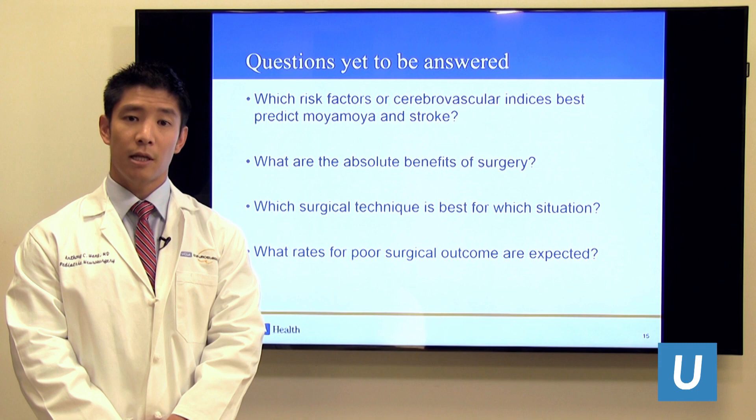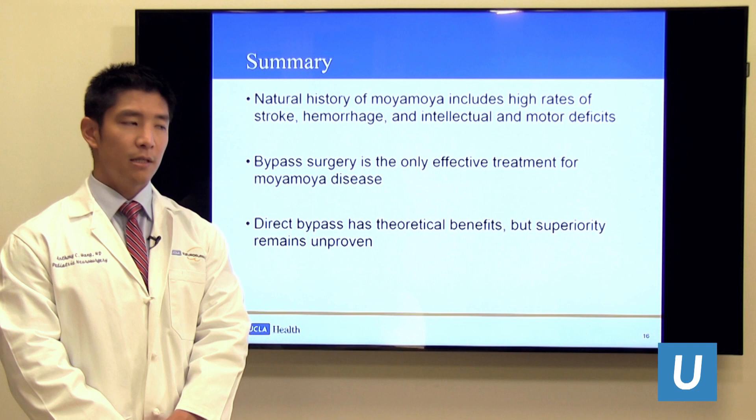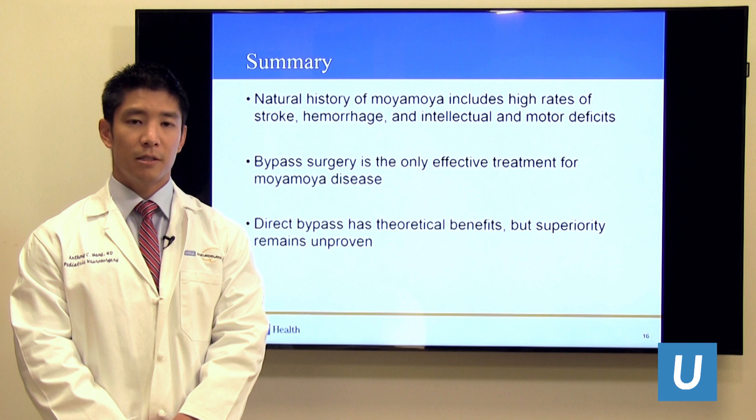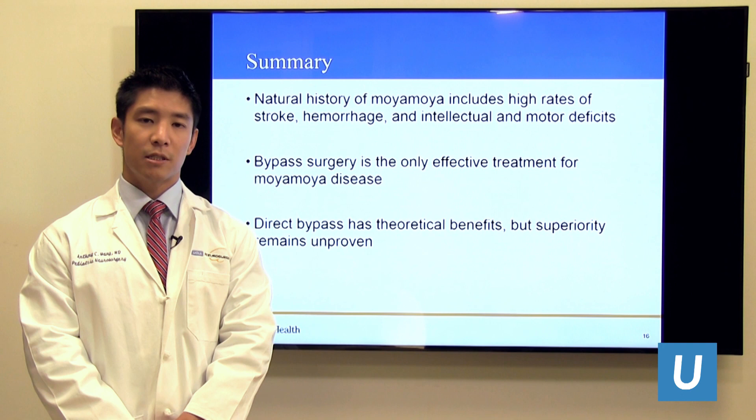In summary, the natural history of Moyamoya includes high risks of stroke, neurocognitive decline, and motor deficits. However, bypass surgery is very effective and is the only effective treatment for this disease, significantly improving rates of neurologic decline and motor deficits and essentially halting the risk of stroke. Finally, direct bypass has theoretical benefits over indirect bypass, but its superiority remains unproven.